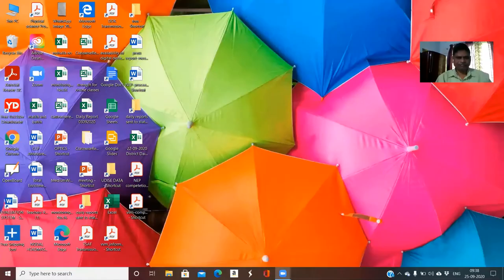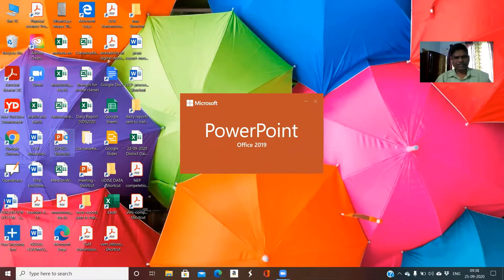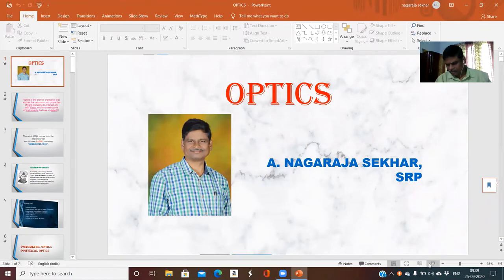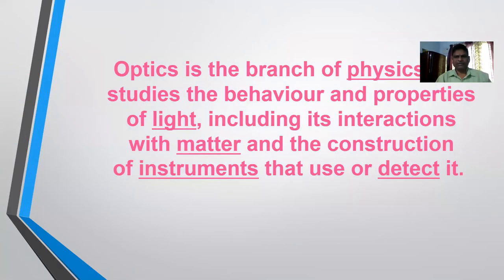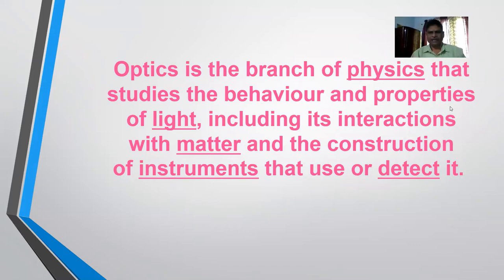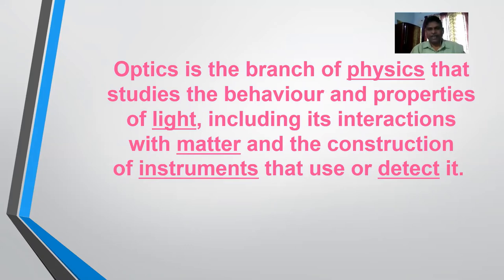I will show you some important slides — please go through them. What is the meaning of optics? Optics is the study of all the things we can see. Optics is a branch of physics which studies the behavior and properties of light, including its interaction with matter and the construction of instruments that use or detect it. The behavior of light and the properties of light are the important points to be discussed in optics.